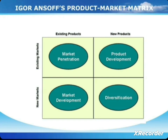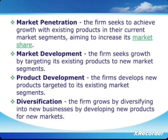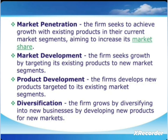This model is known as the Ansoff Product-Market Matrix. There are four quadrants: the first is market penetration, the second is market development, the third is product development, and the fourth is diversification. Market penetration means achieving growth with existing products in the current market segment — seeking maximum growth for the same product in the same market.